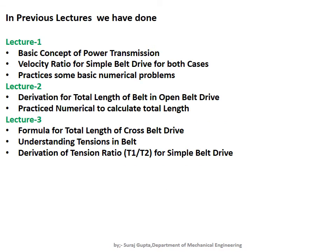This topic is from the fourth unit of basics of mechanical engineering. First, let's review what we covered in previous lectures. In lecture one, we covered the basic concept of power transmission, derived the velocity ratio formula for simple belt drive for two cases — slipping and non-slipping conditions — and practiced numerical problems based on those velocity ratios.